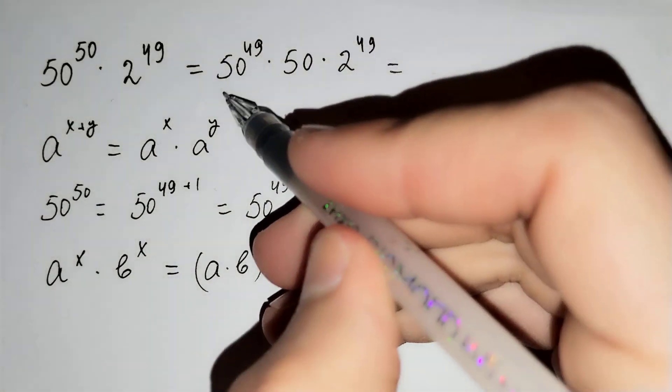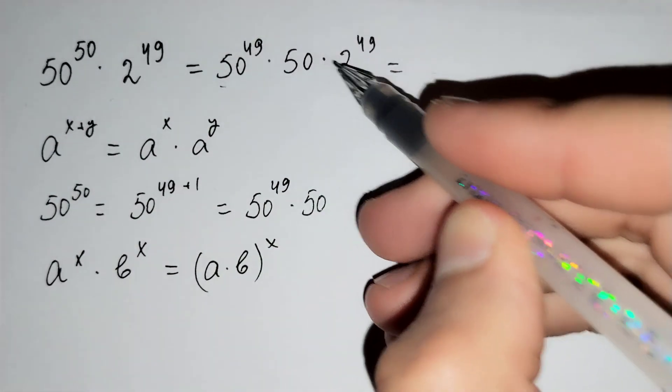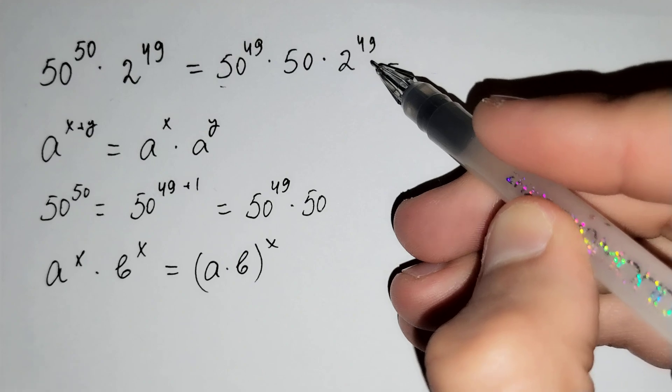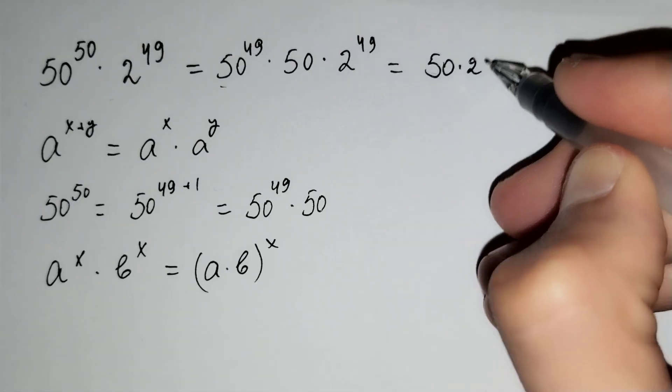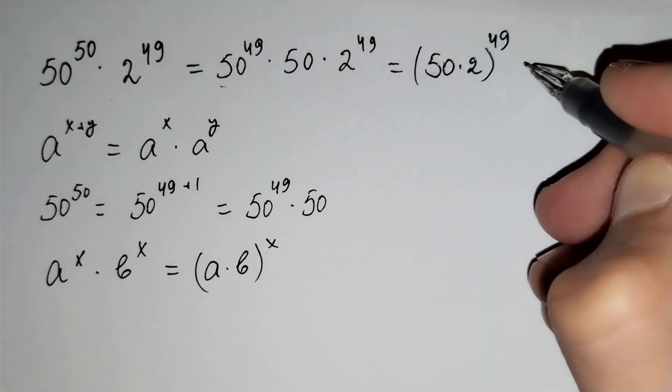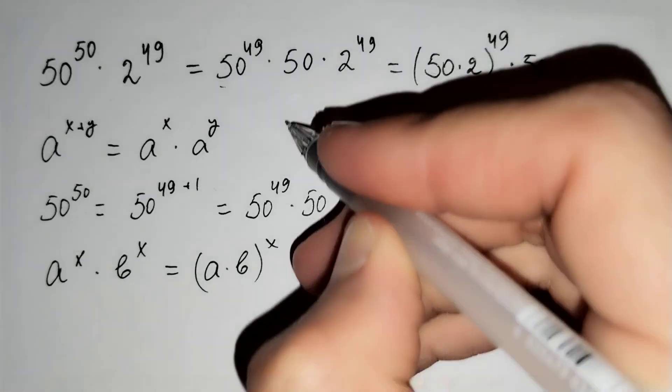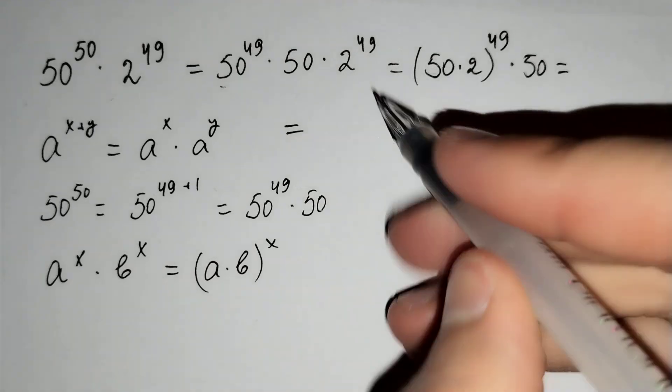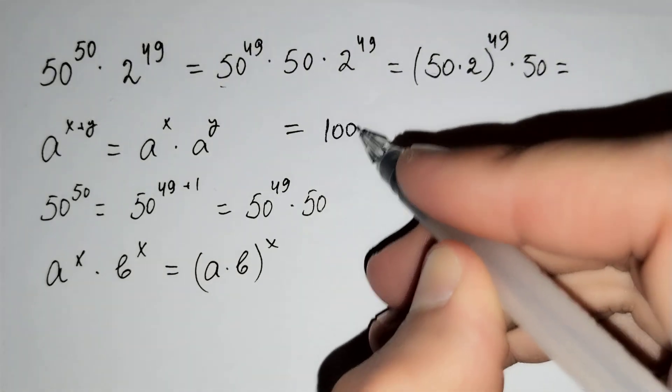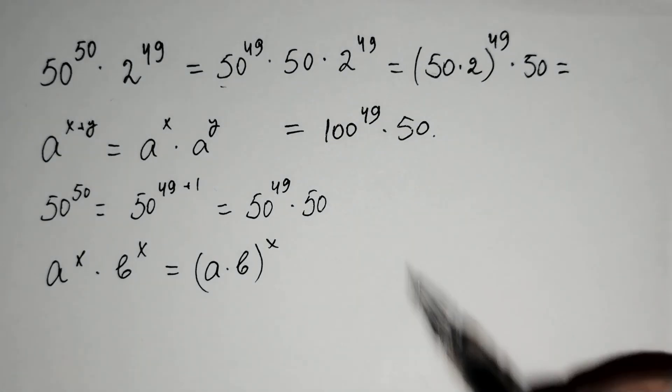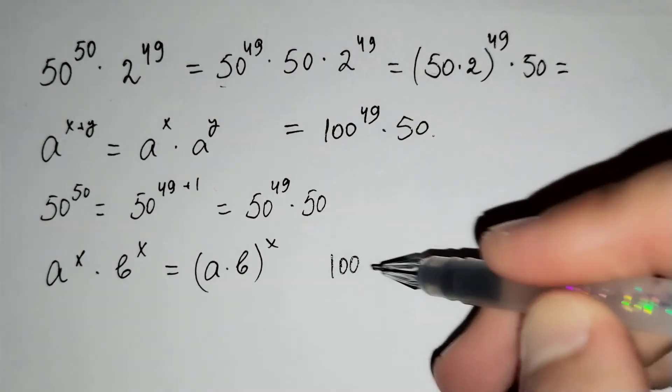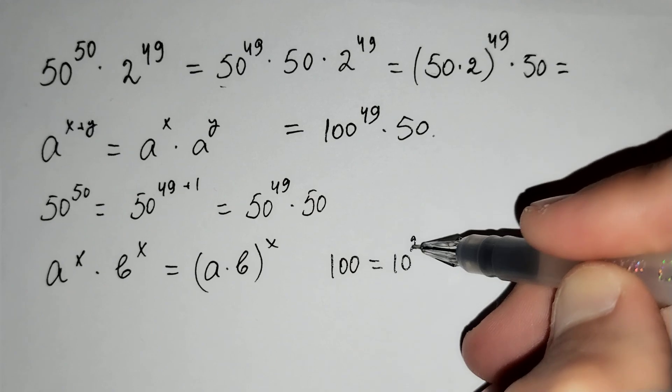For this formula, 50 power 49 times 2 power 49 equals 50 times 2 power 49 times 50. This is equal to 100 power 49 times 50. And we know that 100 equals 10 squared.